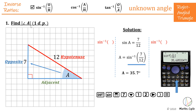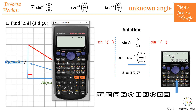Let me show you that on the calculator. Press shift, then sine — that brings up sine inverse. Use the ratio button, put in 7, arrow down, type 12. Use the arrow to release the cursor from the denominator, finish your brackets, and press equals to get your answer of 35.7 degrees.